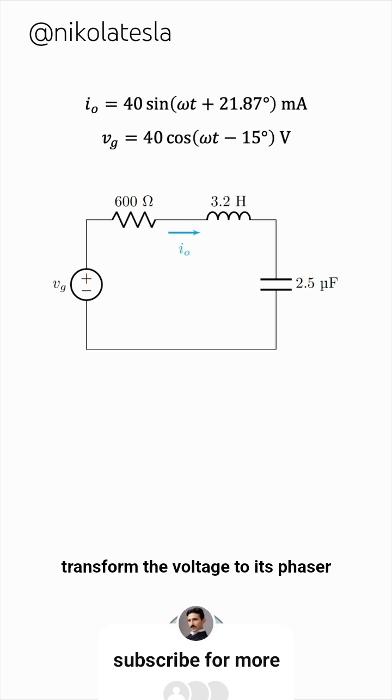We'll transform the voltage to its phasor, the current to its phasor, and then find the impedance of each component. The impedance of a resistor is its resistance, in this case 600 ohms.